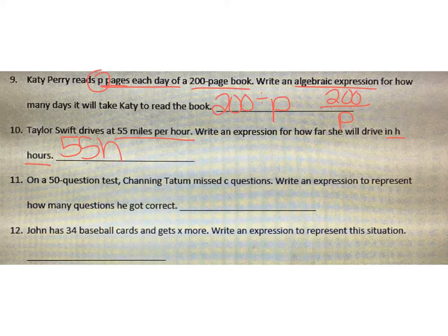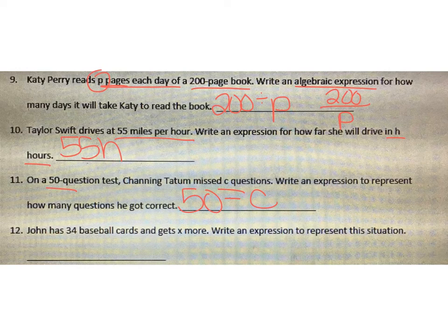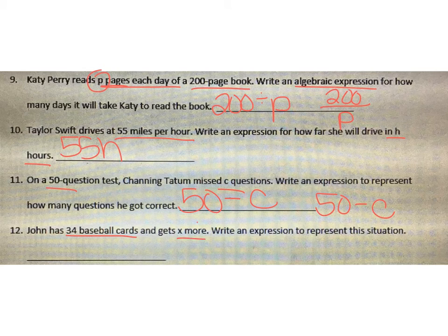On a 50-question test, Channing Tatum misses C questions. Write the expression to represent how many he got correct. So 50 minus C, because you're subtracting how many he got wrong to see how many he got correct. Next: John has 34 baseball cards and he gets X more. Hopefully you see that more means addition. Write an expression to represent this situation — it's going to be 34 plus X.